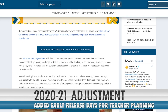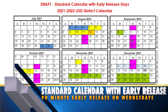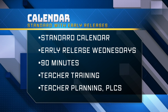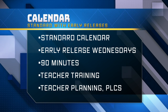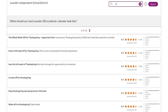The standard calendar with early release dates includes all of those popular components, in addition to Wednesday 90-minute early releases throughout the year on most weeks. This time would be used for teacher professional development, training time, meetings with professional learning communities, and teacher planning time.